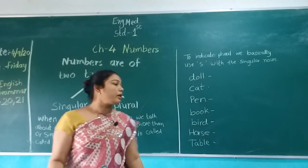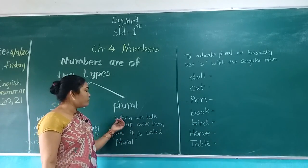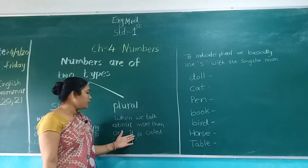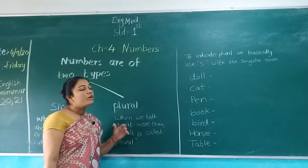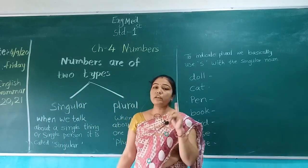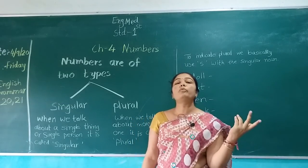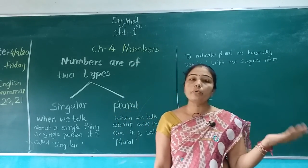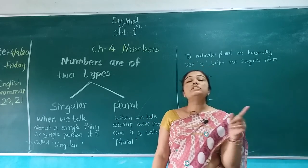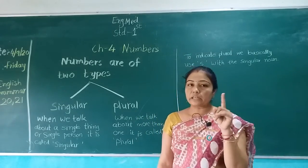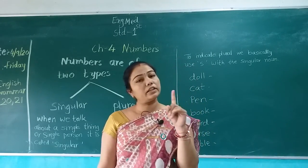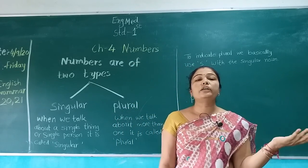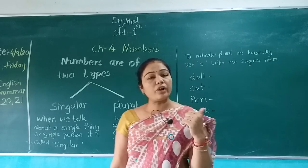Plural: when we talk about more than one, it is called plural. One से ज्यादा का अगर हमको बात करना है, तो वो plural form में आएगा। Singular means अगर हम बात करते हैं एक की, तो उसे singular कहते हैं। When we talk about more than one, then it is called plural form.